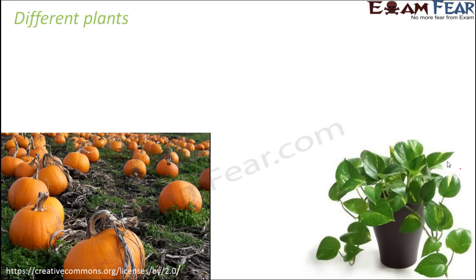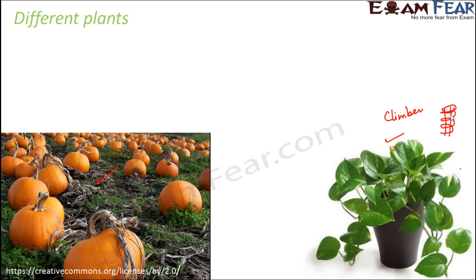This one is a money plant. If you look at them, they are not going vertically upward — it's kind of climbing. The money plant is an example of a climber, because the stems are flexible. The stems can actually bind over a strong support, like a rod, and climb up it — that's how they grow.